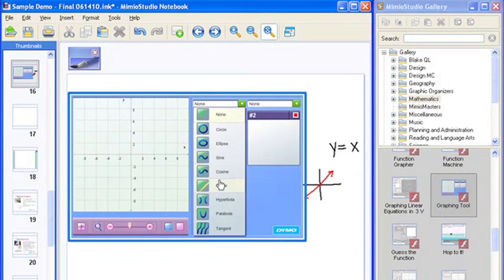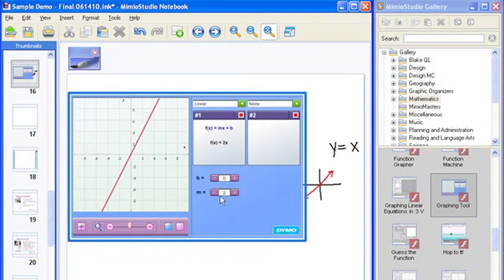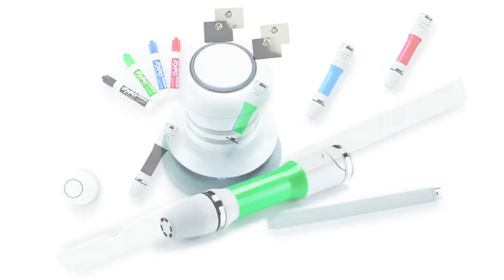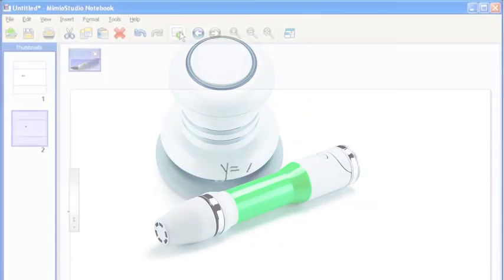The Mimeo Capture system works with your Mimeo Teach interactive system and comes complete with a magnetic charging tray, four rechargeable marker holders, and a digital eraser.